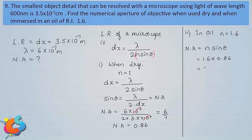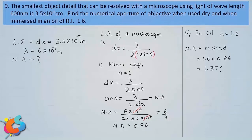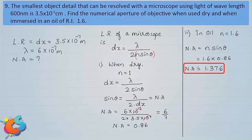The numerical aperture in the second case (immersed in oil) is 1.6 × 0.86 = 1.376. Remember, numerical aperture carries no unit — it is just a number, being the product of refractive index n and sinθ.